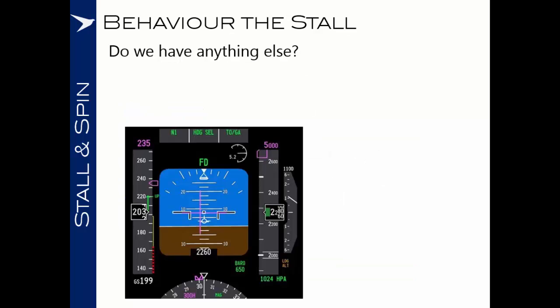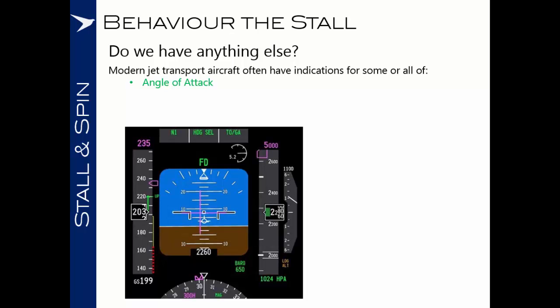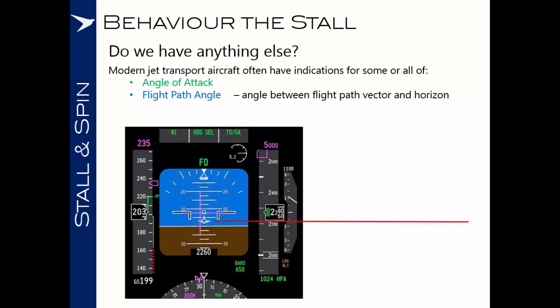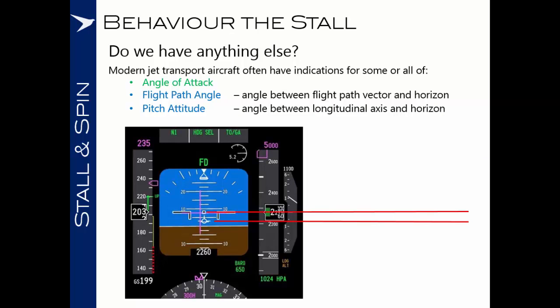Not all SAVAIRS indicators may be present on your aircraft or in your situation. Modern jet transport aircraft often have additional visual indicators. You may have an angle of attack gauge marked with a warning at the critical angle of attack. You may have an indicator showing your flight path angle — the angle between your flight path vector and the horizon — and almost certainly something showing pitch attitude, the angle between the longitudinal axis and the horizon.